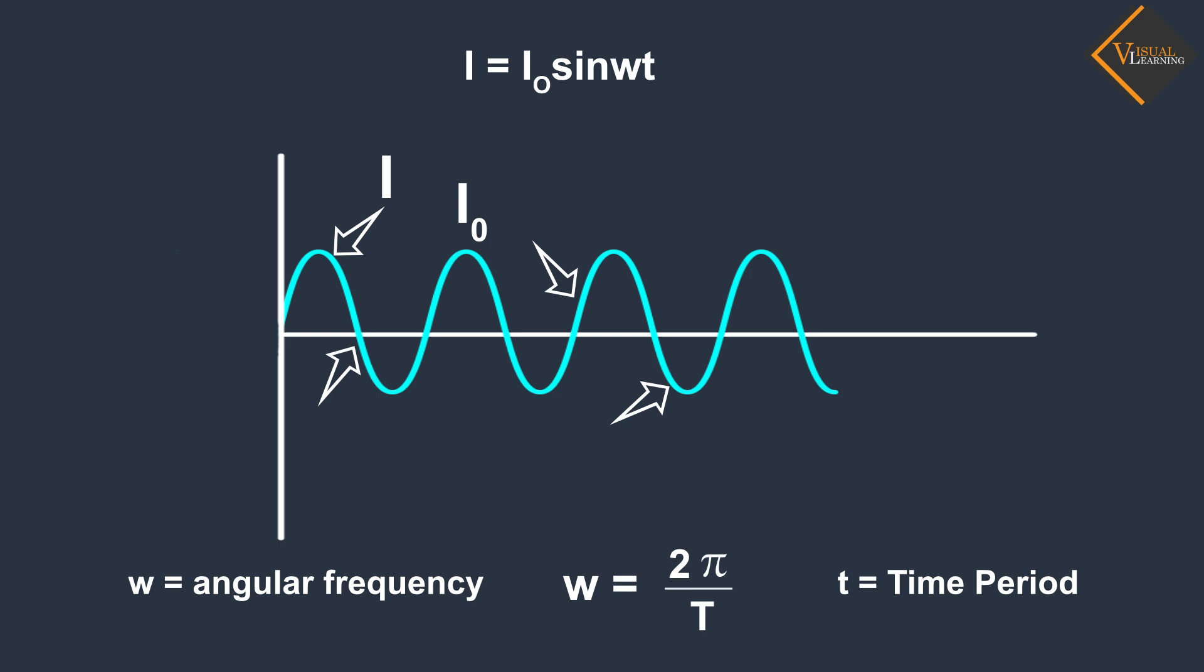We can represent alternating current in its sine and cosine forms.